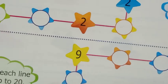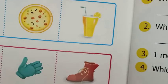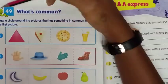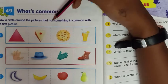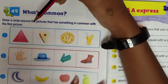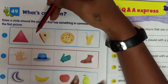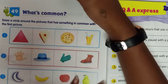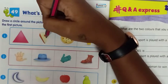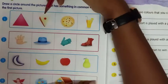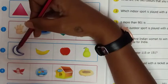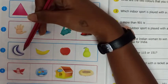Next, what's common? You have to draw a circle around the pictures that has something in common with. Here we go. Circle it. And again, here we go. This is common. Moon is common. Circle it.